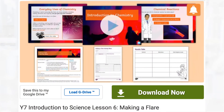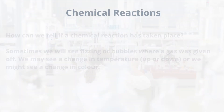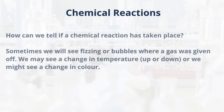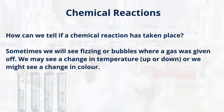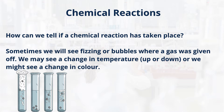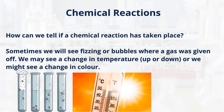Today we're going to look at some interesting parts of chemistry. Let's start with chemical reactions. How can you tell if a chemical reaction has taken place? Sometimes we'll see fizzing or bubbles where a gas has been given off. We may see a change in temperature, up or down, or we may see a change in colour.